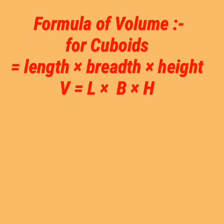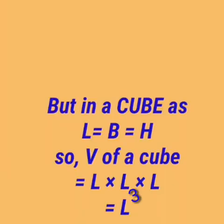Let's know the formula of volume. For cuboids, volume equals length into breadth into height, or V = L × B × H. But in a cube, all the surfaces are squares, so the length, breadth and height are equal. So the volume of a cube is length × length × length, or we can say length to the power three — L cubed.